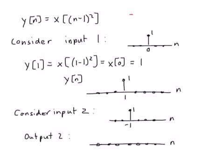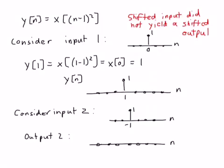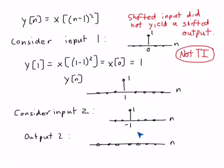So the system is not time invariant. This is an example of using a counter-example to demonstrate that a system is not time invariant. All you have to do is find one pair of inputs that are shifted versions of each other that don't yield shifted outputs.